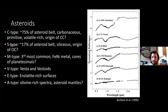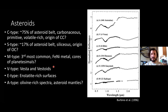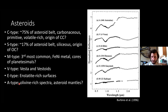S-type materials make up about 17% of the asteroid belt and are siliceous, thought to be the origin of ordinary chondrites. M-type is the third most common, made primarily of iron-nickel metal, potentially representing disrupted cores of differentiated planetesimals. Then there are V-type asteroids — Vesta and the Vestoids — which is basically a differentiated planetesimal that escaped the giant impact phase and remains intact today.